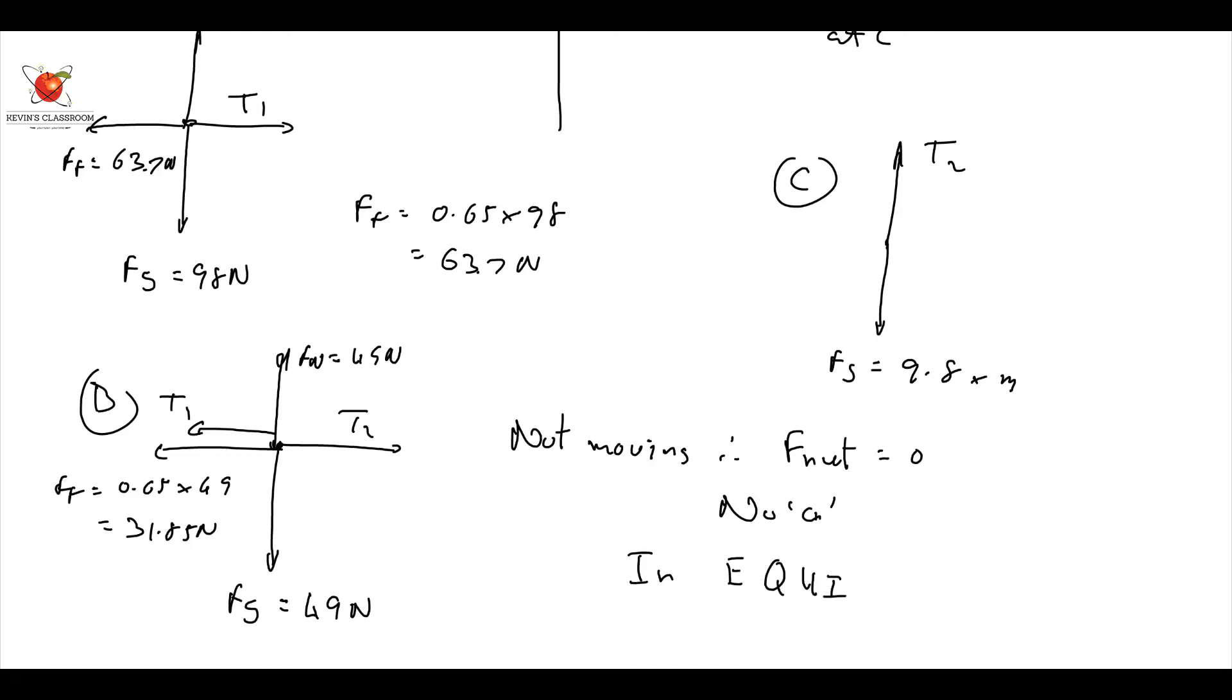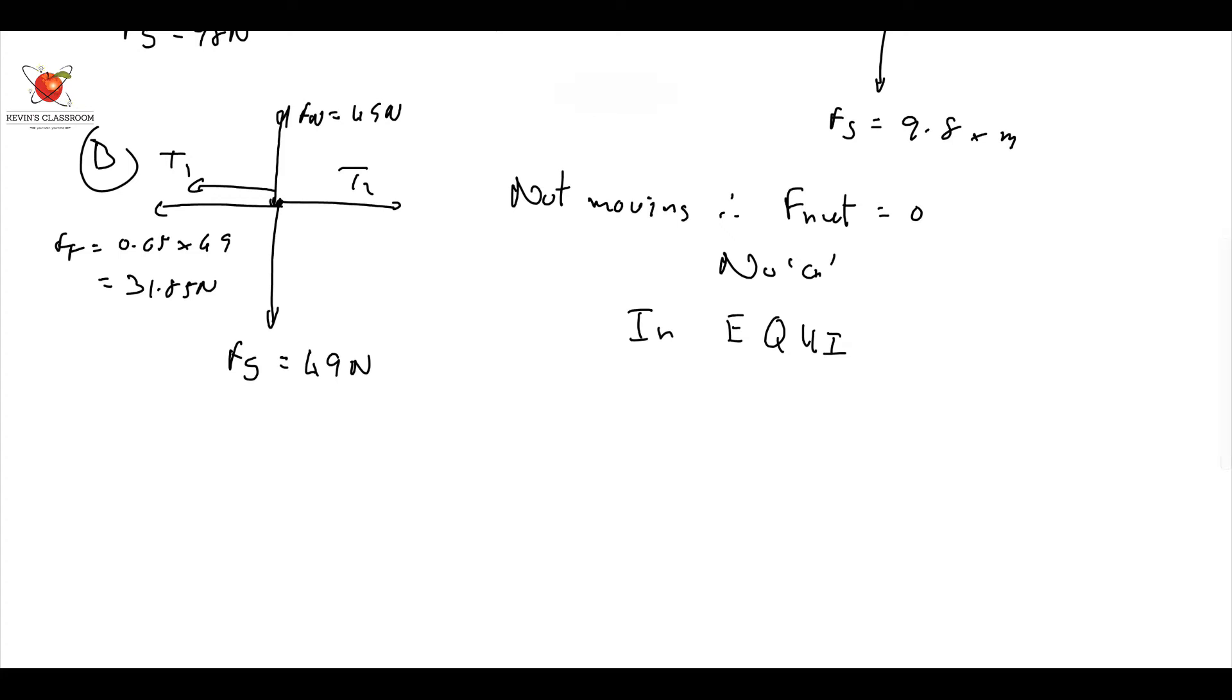And if it's in equilibrium, it means that I can put the tension, I can say equal goes left, right. So when I say force to the left equals force to the right, so if I look at A, I can see that T1 must be equal to 63.7 newtons.